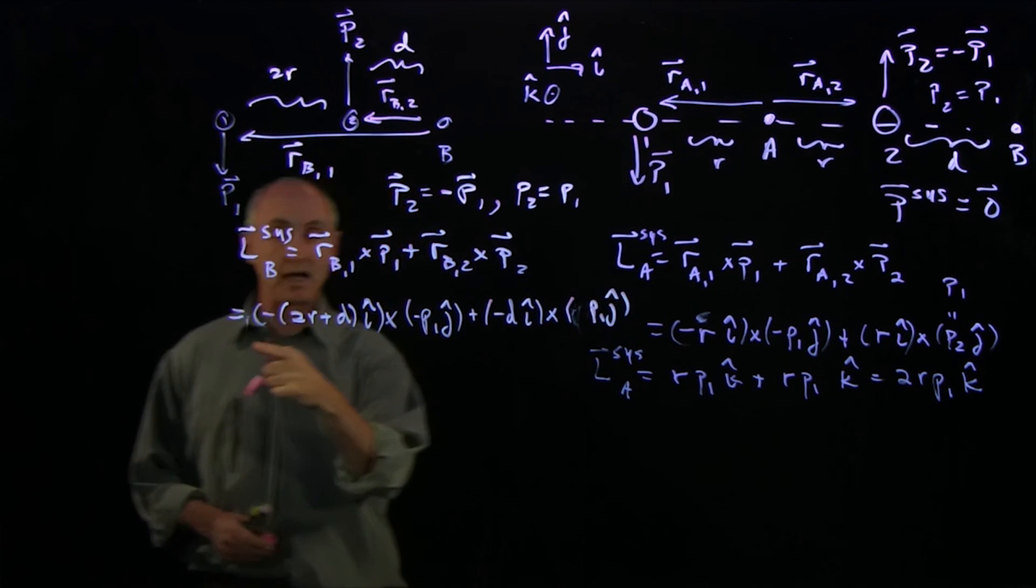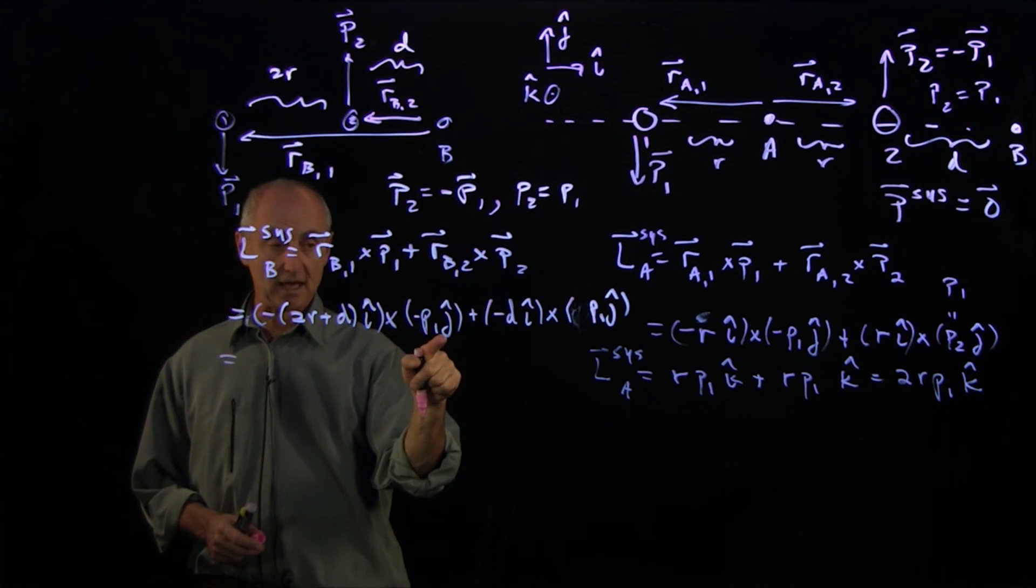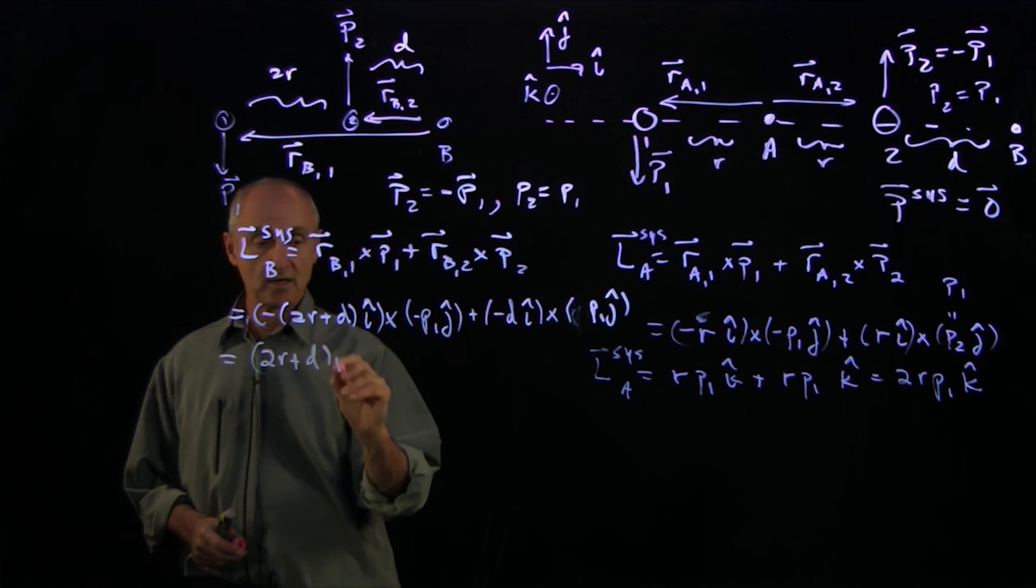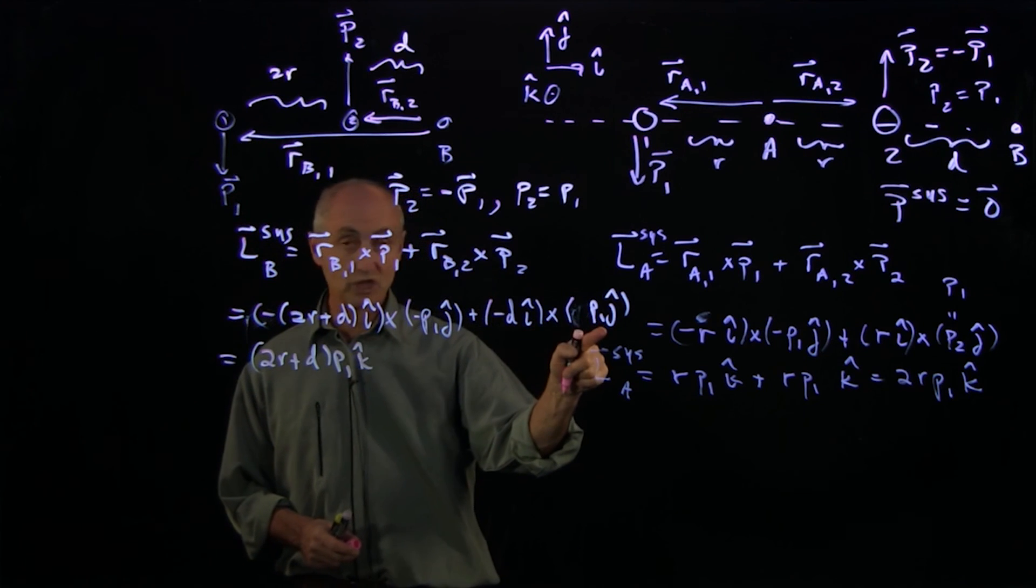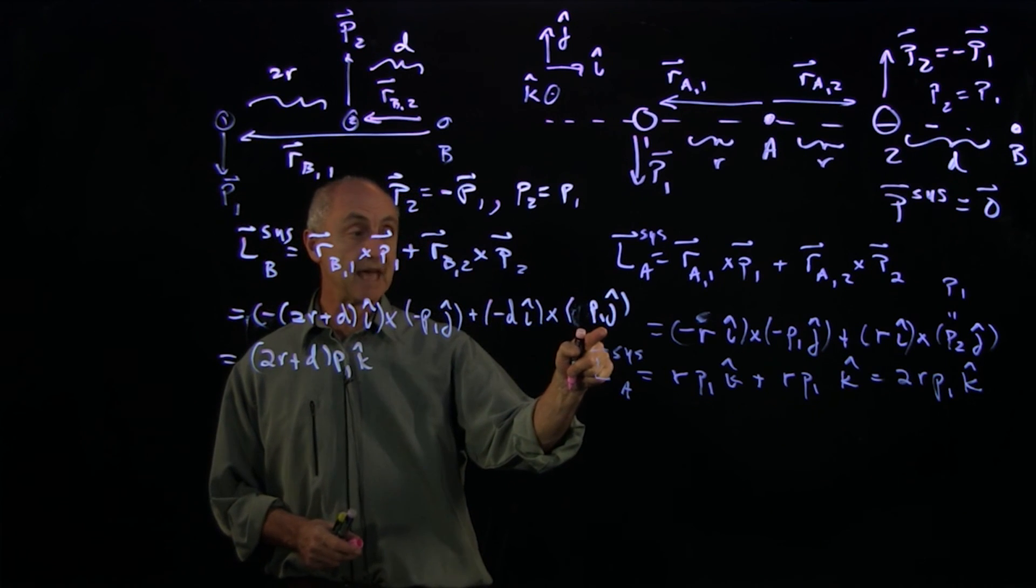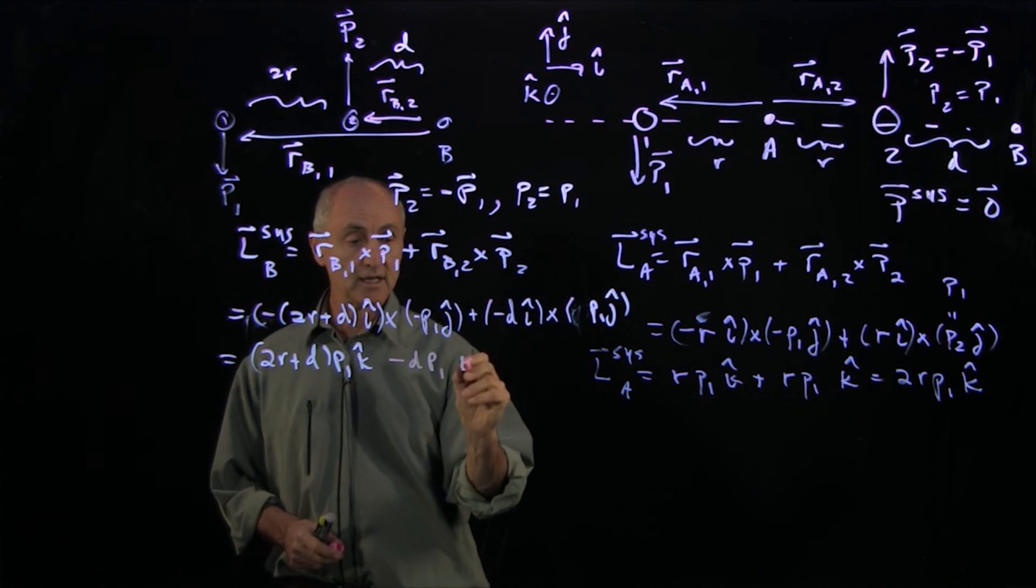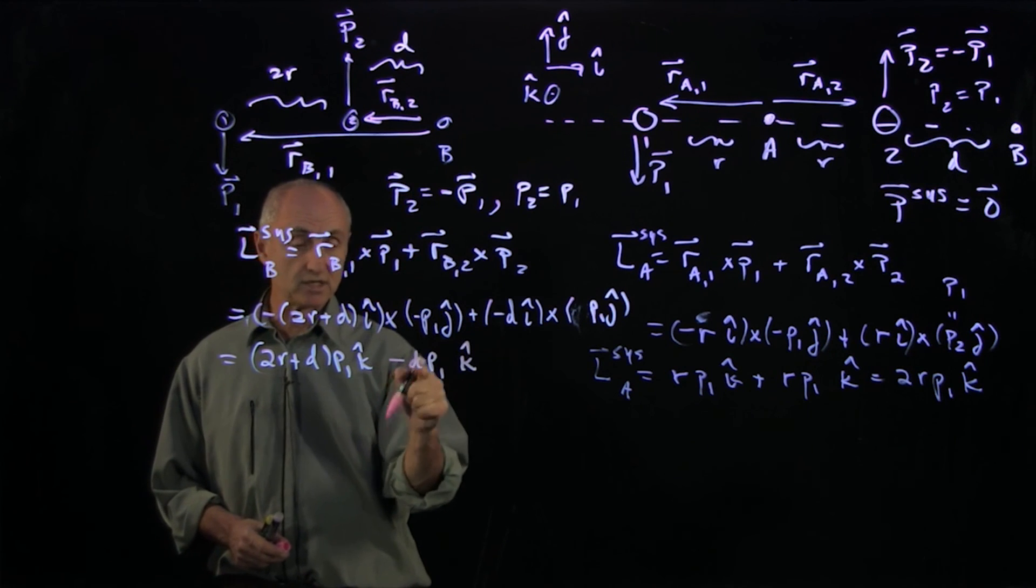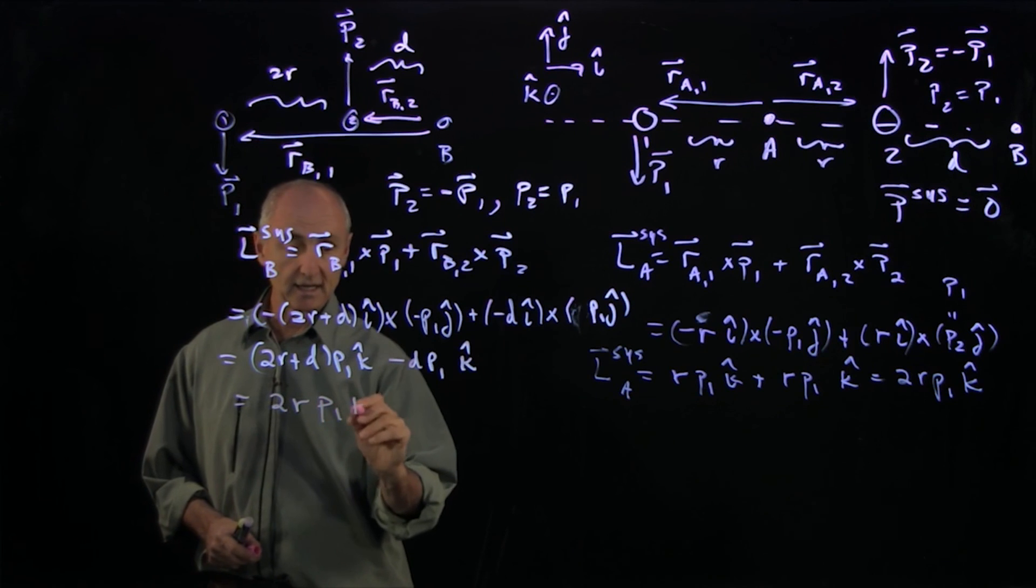And now I take the cross products. i hat cross j hat is k hat, a minus sign, minus sign, and that makes plus, so I have 2R plus d P1 k hat. Now notice here, I have i hat cross j hat, which is k hat, but there's a minus sign, so I have minus d P1 k hat. Here I have plus d P1 k hat, minus d P1 k hat, and so I get 2R P1 k hat.